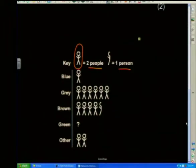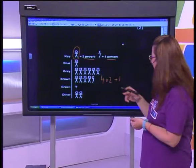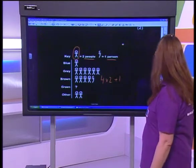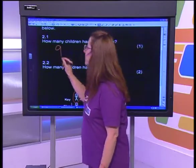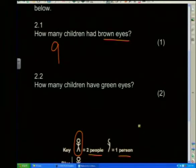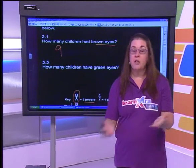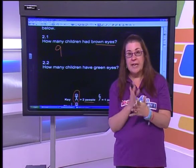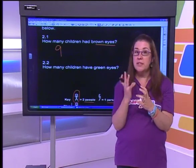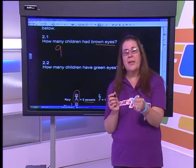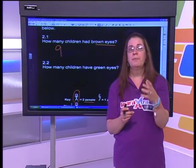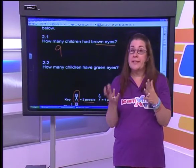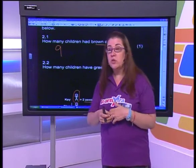We go to brown and count how many little people we have: one, two, three, four full ones. So we've got four times two, plus one half. Four times two plus one is nine. So there are nine children with brown eyes. Also — try to use your calculator. You've got a calculator with you, so use it. Exam pressure does funny things to the mind, and we do silly things we can't account for. So use your calculator because you have it — use it as a tool.